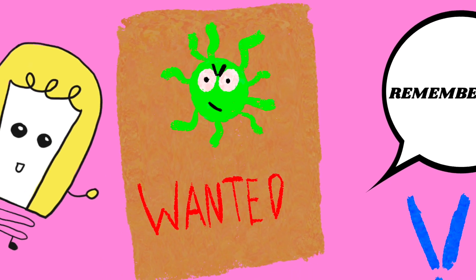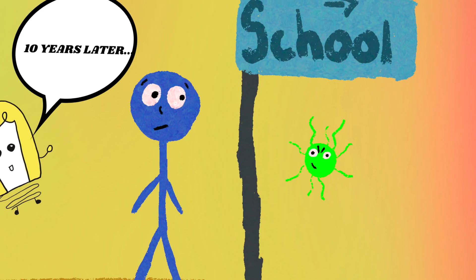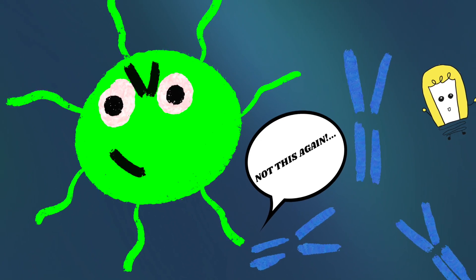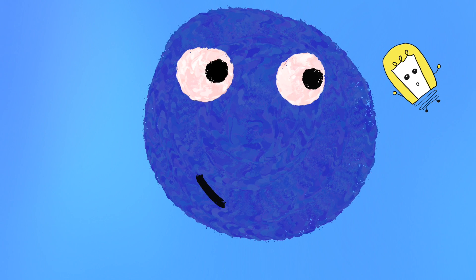So even after years, if that antigen returns to the body, the body can create antibodies more efficiently to get rid of the antigen and stop you from getting sick entirely. This is what's called immunity.